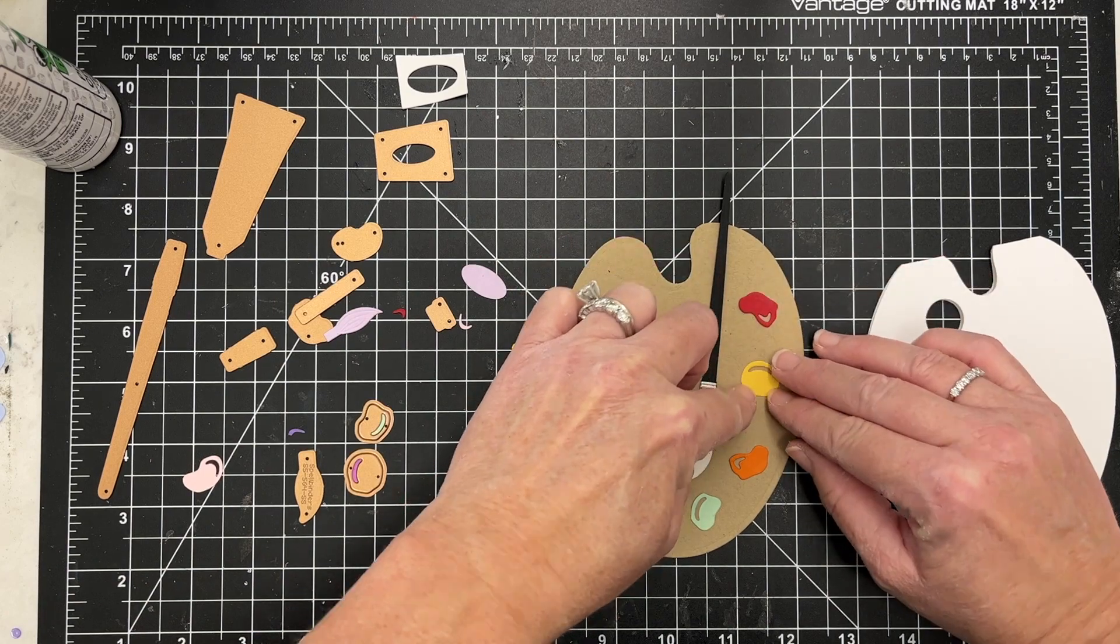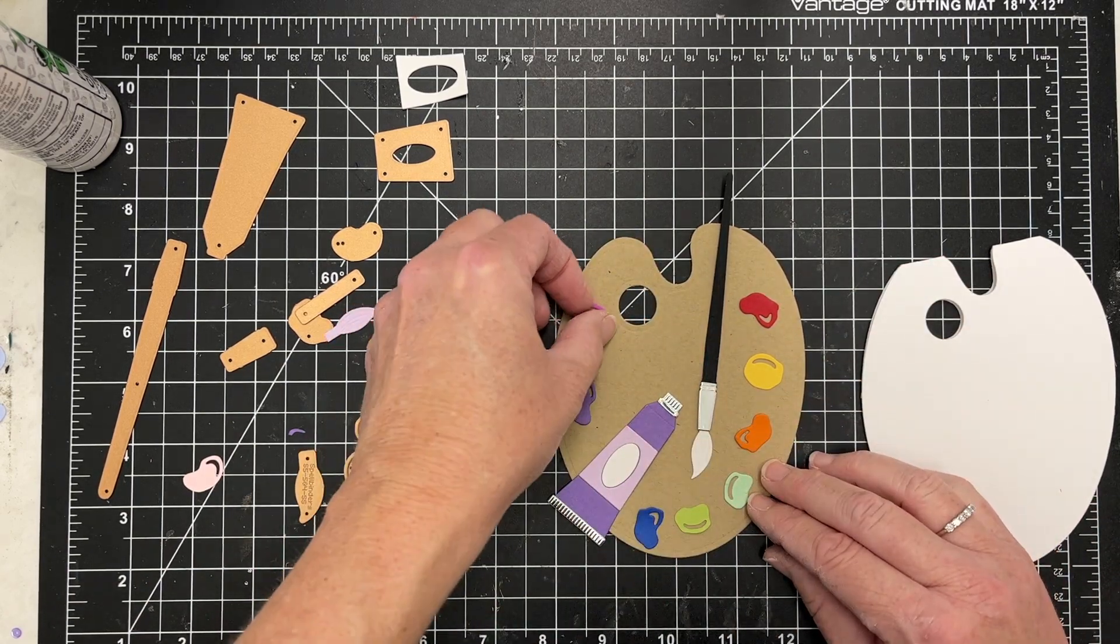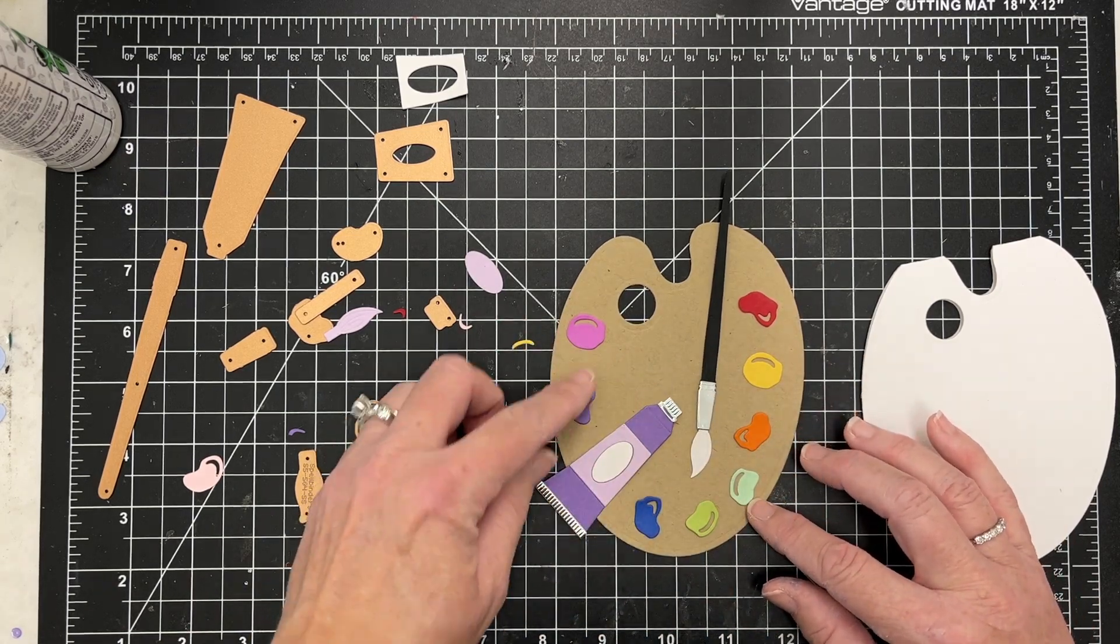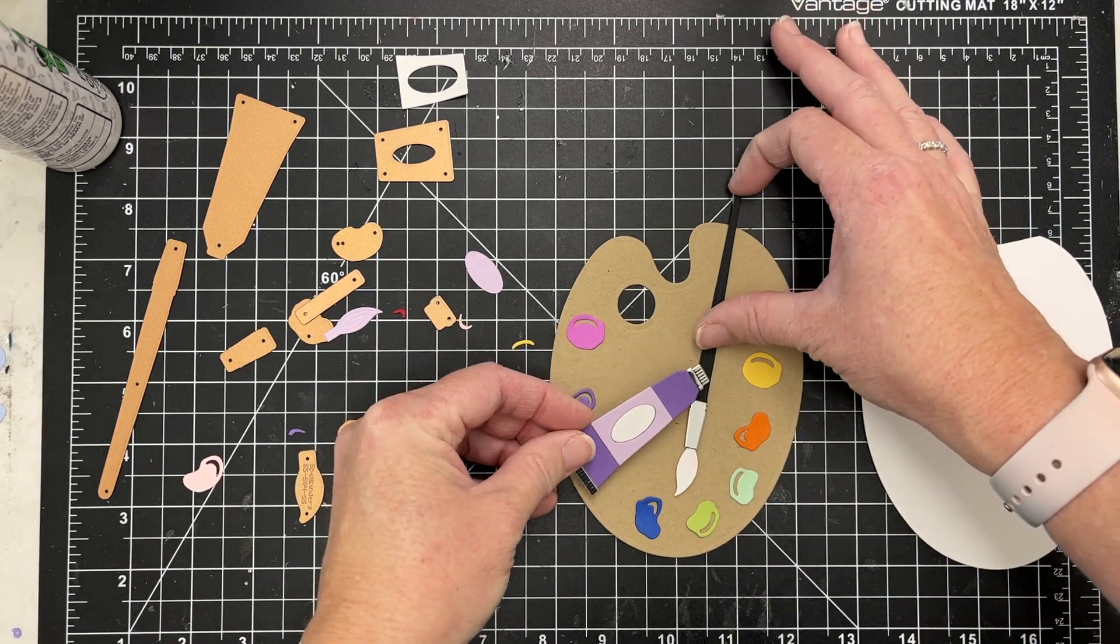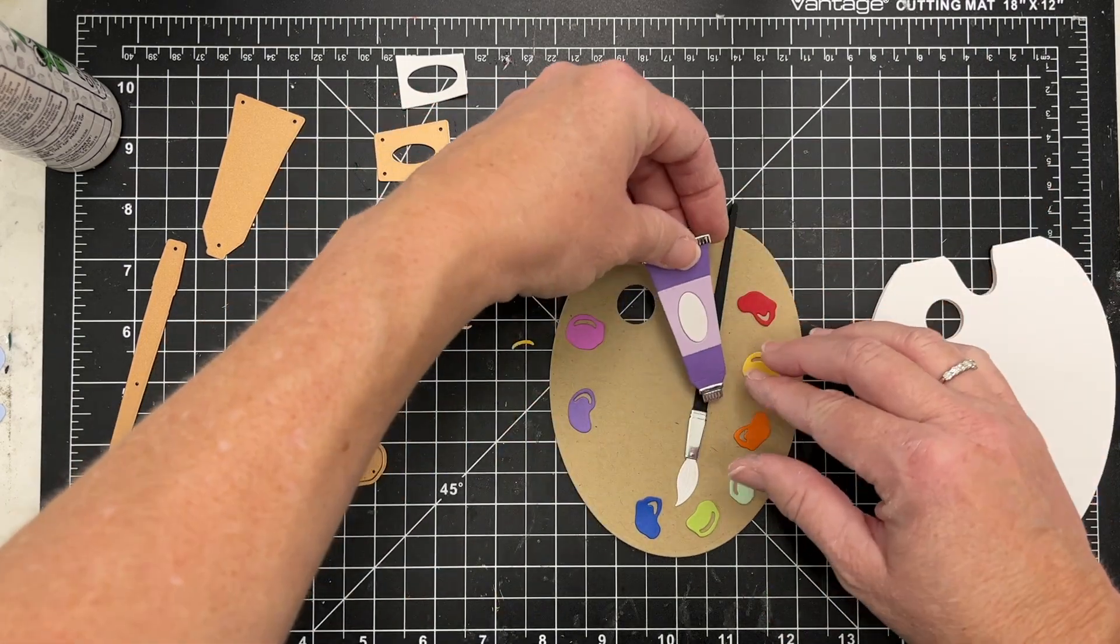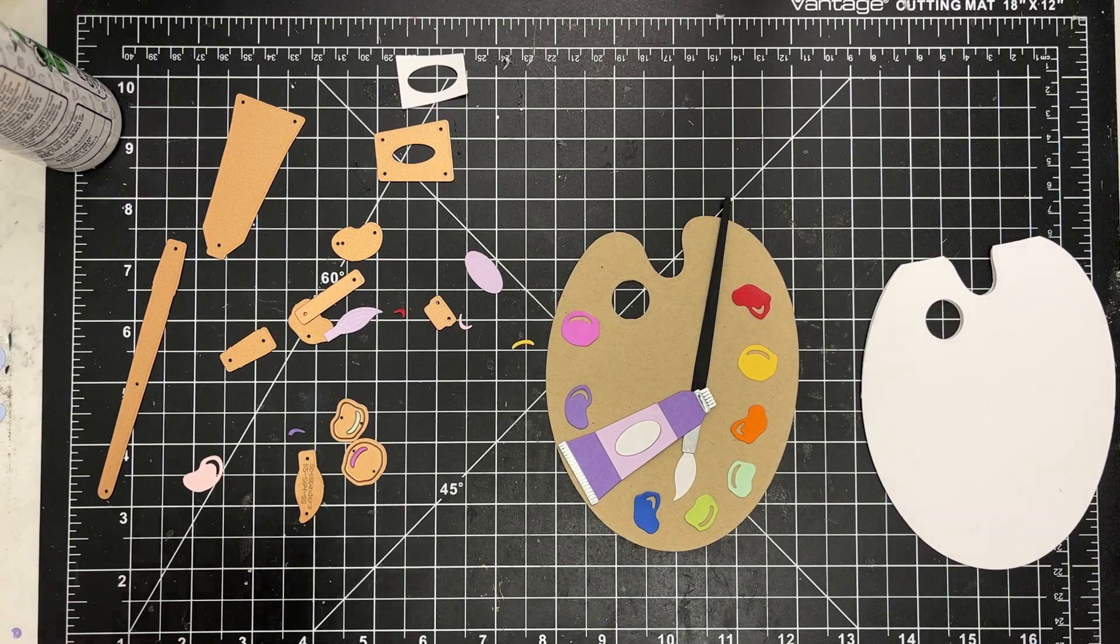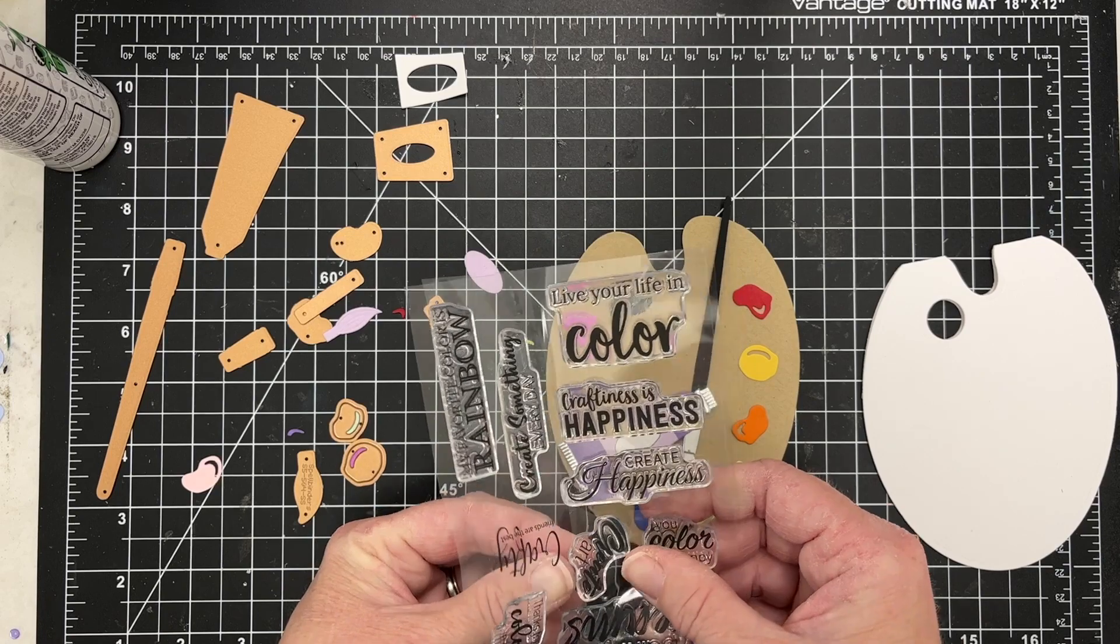And again they're very quick and easy, these cards to make. You could pop these little paint pieces up with some foam. I'm just going to glue mine down. You could also come back and fill in those little highlights. You can see they cut out, the dies cut out the little pieces. You could come back and put another color in there if you wanted to. So it's really so customizable to whatever you want to create.